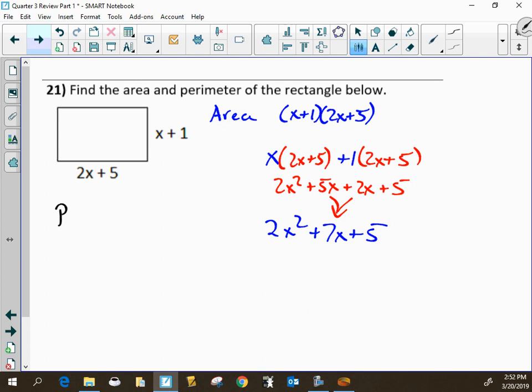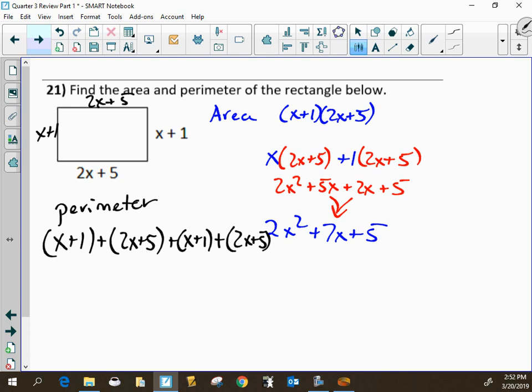To do perimeter, we just add up all the sides. So that's x plus 1 plus 2x plus 5 plus x plus 1 plus 2x plus 5. Because it's a rectangle, this side is 2x plus 5 and this side is x plus 1. And so we'll get 6x plus 12.